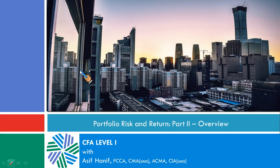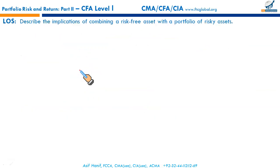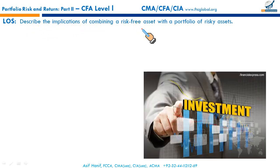Your next reading is portfolio risk and return part 2, and these are the specific learning outcome statements. The first analysis describes the implication of combining a risk-free asset with a portfolio of risky assets. That is exactly what we did in the previous reading, portfolio risk and return part 1.